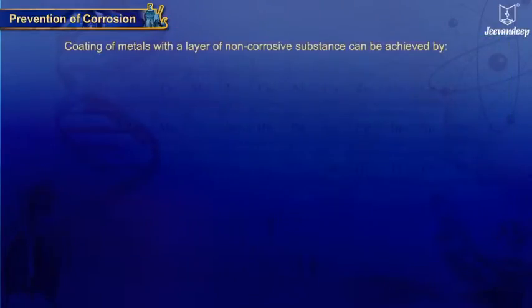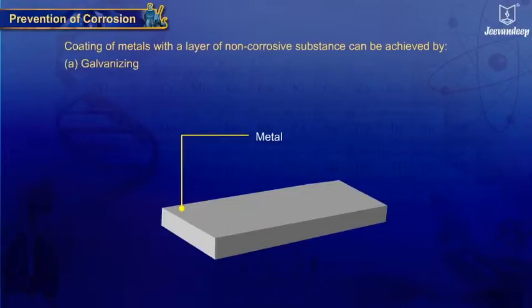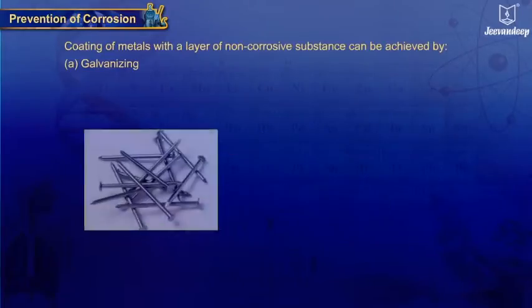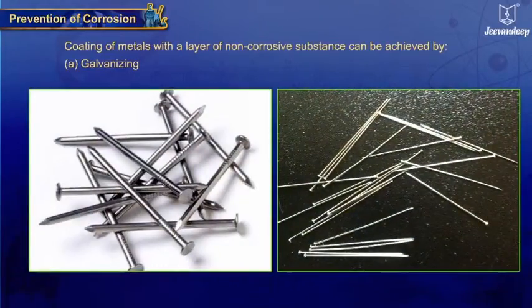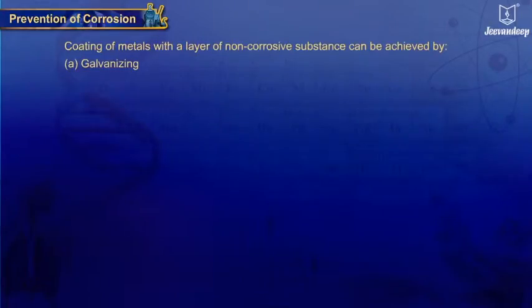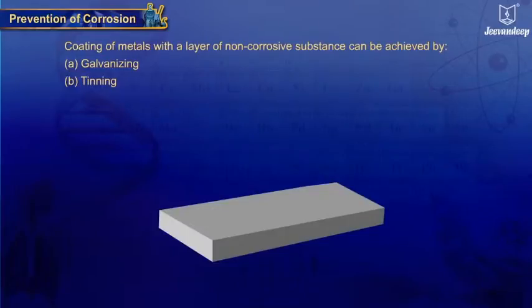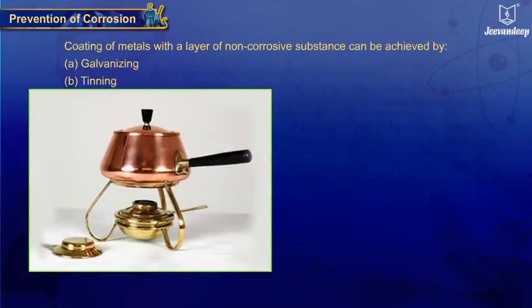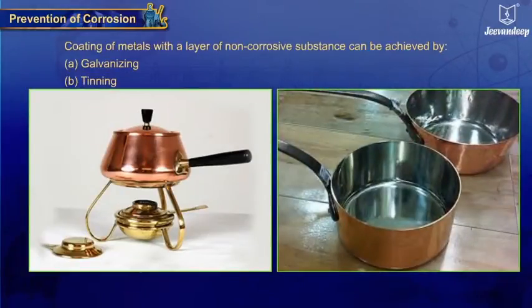Coating of metals with a layer of non-corrosive substance can be achieved through the following ways: (a) Galvanizing - this is a process of coating the corrosive substance with zinc layer, for example shiny iron nails, pins, etc. (b) Tinning - this process involves coating of molten tin over metals to prevent corrosion, for example tinning of cooking vessels made of copper and brass.